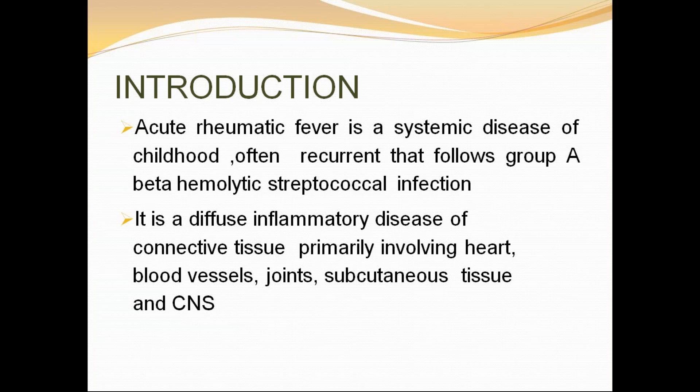Why does it involve all these structures — heart, blood vessels, joints, subcutaneous tissue? Because of molecular mimicry, where the body produces antibodies against these tissues. We are going to discuss that during the pathogenesis section.